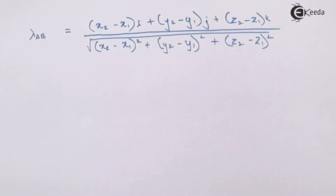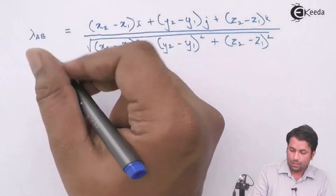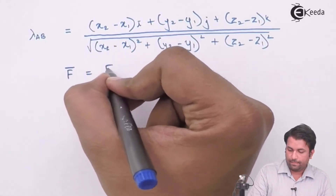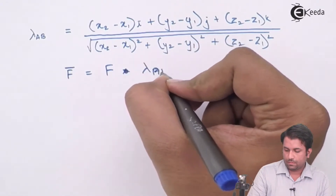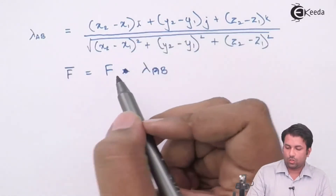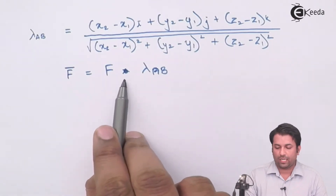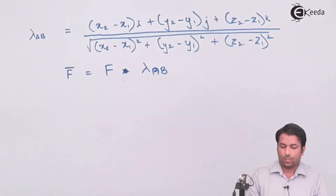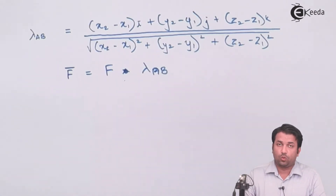This is how I have got the unit vector. Now to get the magnitude — this is how we find out the force vector. If we are given the magnitude, we just take the dot product with the unit vector and we can get the force vector. This is how we find the force vector if the force passing through two points is given.